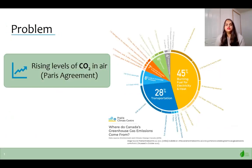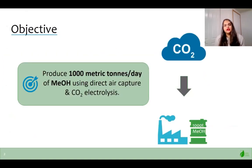There currently is a problem with increased CO2 emissions. As we know, CO2 is a greenhouse gas and therefore contributes to rising atmospheric temperatures globally, and therefore there is a need to reduce global CO2 emissions. To this end, our team is focused on a process that aims to capture atmospheric CO2 and use it to produce a fuel that could be used as energy. Our project objective is to produce 1,000 tons of methanol using direct air capture and carbon dioxide electrolysis.